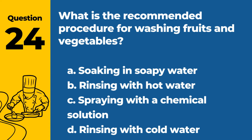Question 24. What is the recommended procedure for washing fruits and vegetables? a. Soaking in soapy water. b. Rinsing with hot water. c. Spraying with a chemical solution. d. Rinsing with cold water. Answer: d. Rinsing with cold water. Fruits and vegetables should be rinsed with cold water to remove dirt and potential contaminants.